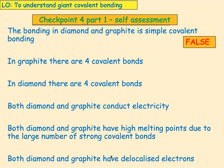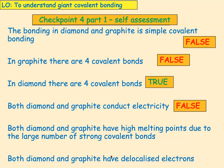In graphite there are four covalent bonds — false, there are only three. In diamond there are four covalent bonds — that is true. Both diamond and graphite conduct electricity — that is false, because only graphite conducts electricity, diamond does not. Both diamond and graphite have high melting points due to the large number of strong covalent bonds — that is true. Both diamond and graphite have delocalised electrons — that is false, because diamond doesn't have any delocalised electrons as all the electrons are involved in covalent bonds.